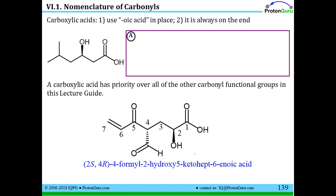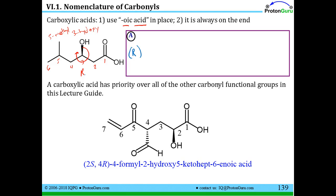For carboxylic acids, the functional group again sits at the end of the molecule and has the highest priority of all functional groups we've discussed. It is numbered carbon 1, and the suffix used is 'oic acid.' For a six-carbon chain with a hydroxy at position 3 and a methyl at position 5, the base name is hexanoic acid. Adding the substituents alphabetically — hydroxy before methyl — and the R configuration at the chiral center, the full name is R-3-hydroxy-5-methylhexanoic acid.